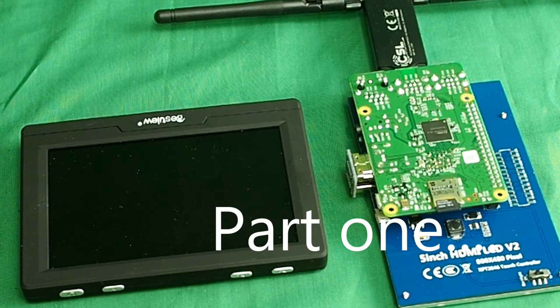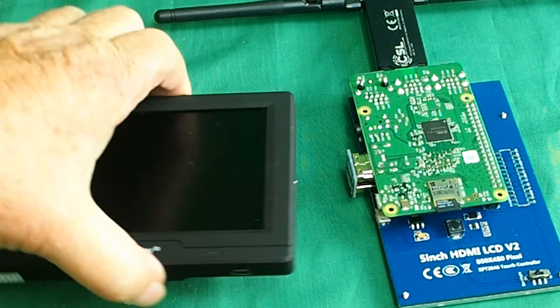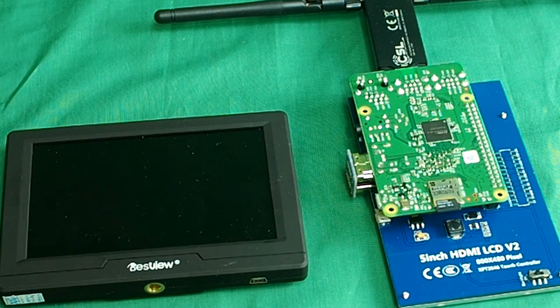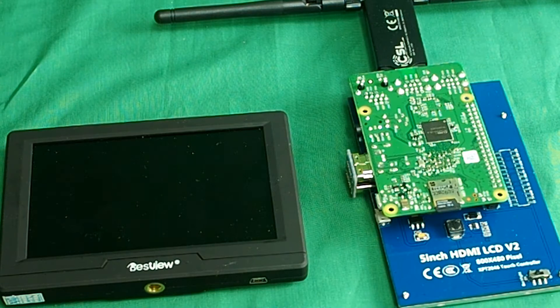This project to build a set of HD FPV goggles has two monitor options. You can either use a 5-inch field monitor like this one. You can get those from Amazon or eBay for around £80.